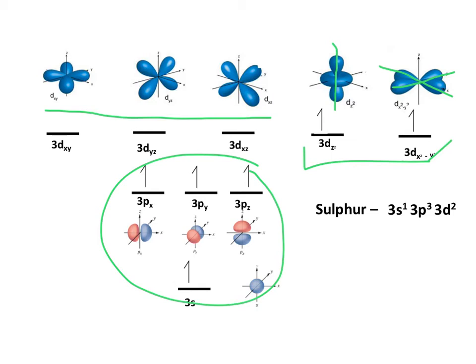Therefore, sulfur can promote two electrons into the d-subshell, and we therefore have the electronic configuration of excited sulfur ready to bond 3s1, 3p3, 3d2.